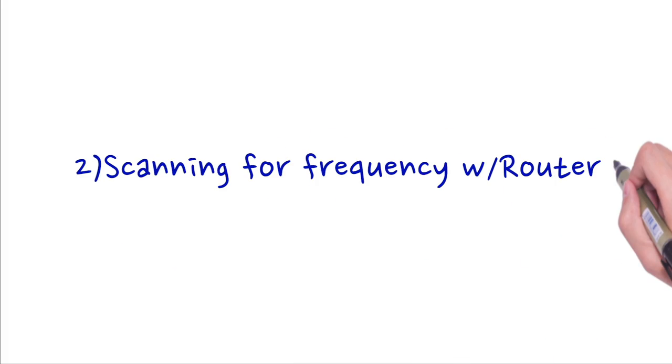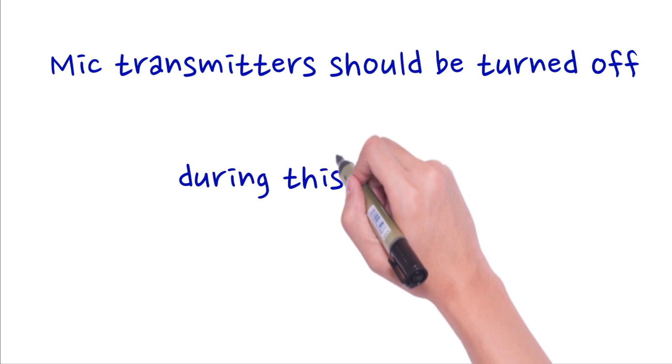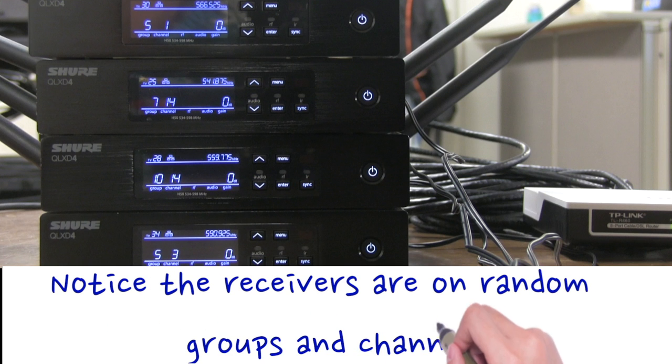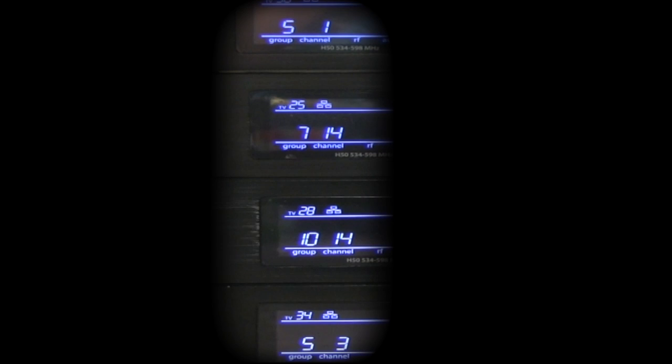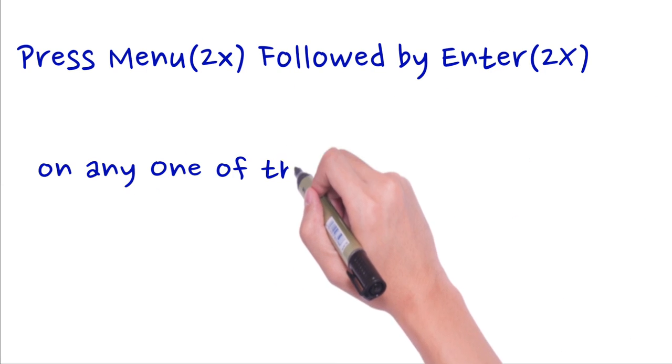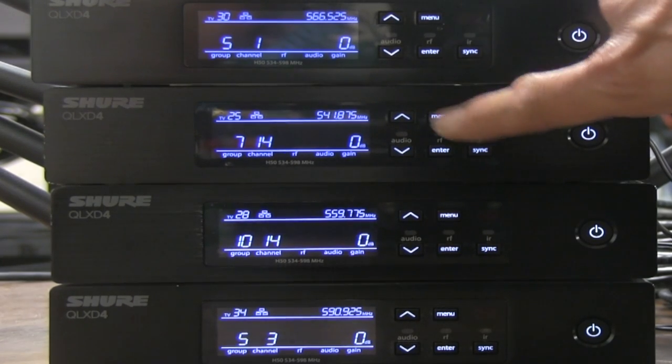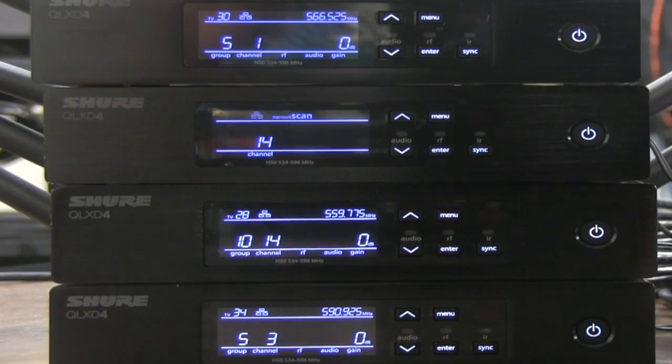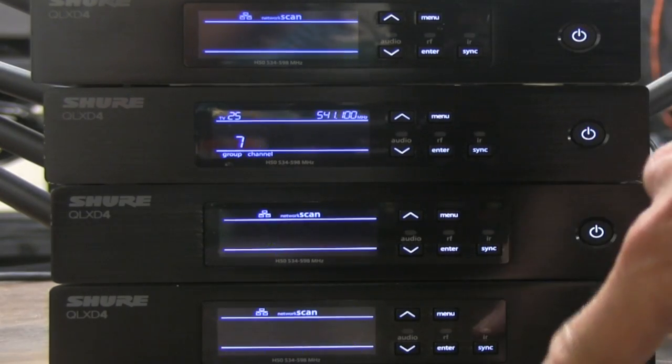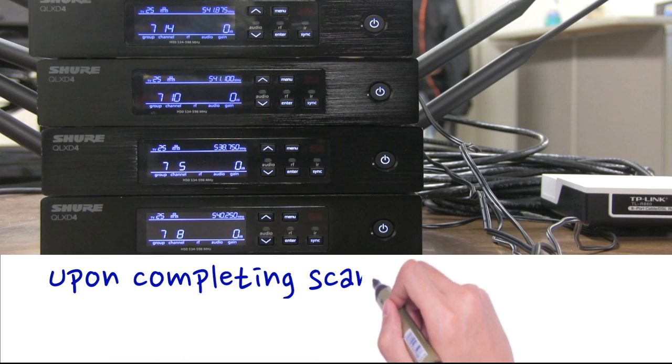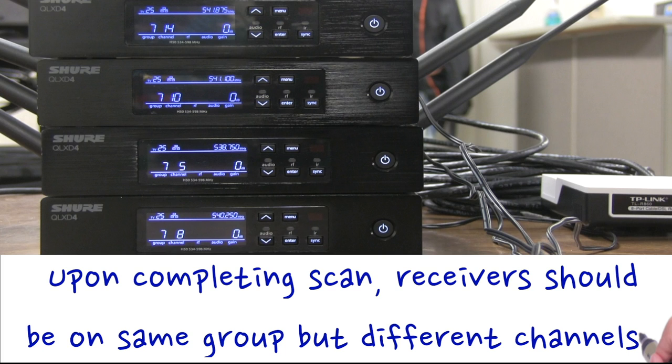Scanning for frequency using a router. Mic transmitters should be turned off during this step. Notice the receivers are on random groups and channels. Press menu twice, followed by enter twice, on any one of the receivers. Upon completing the scan, receivers should be on the same group, but different channels.